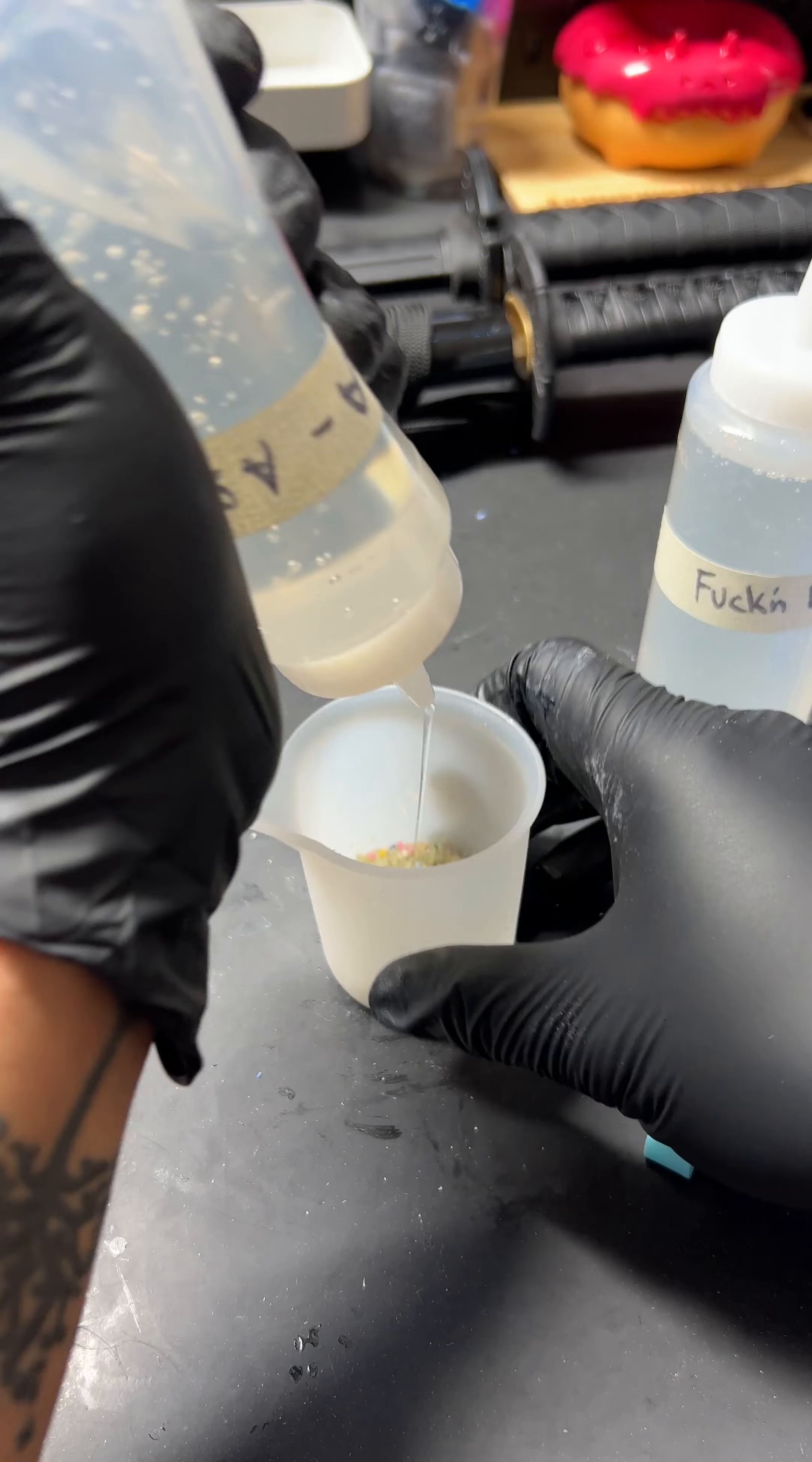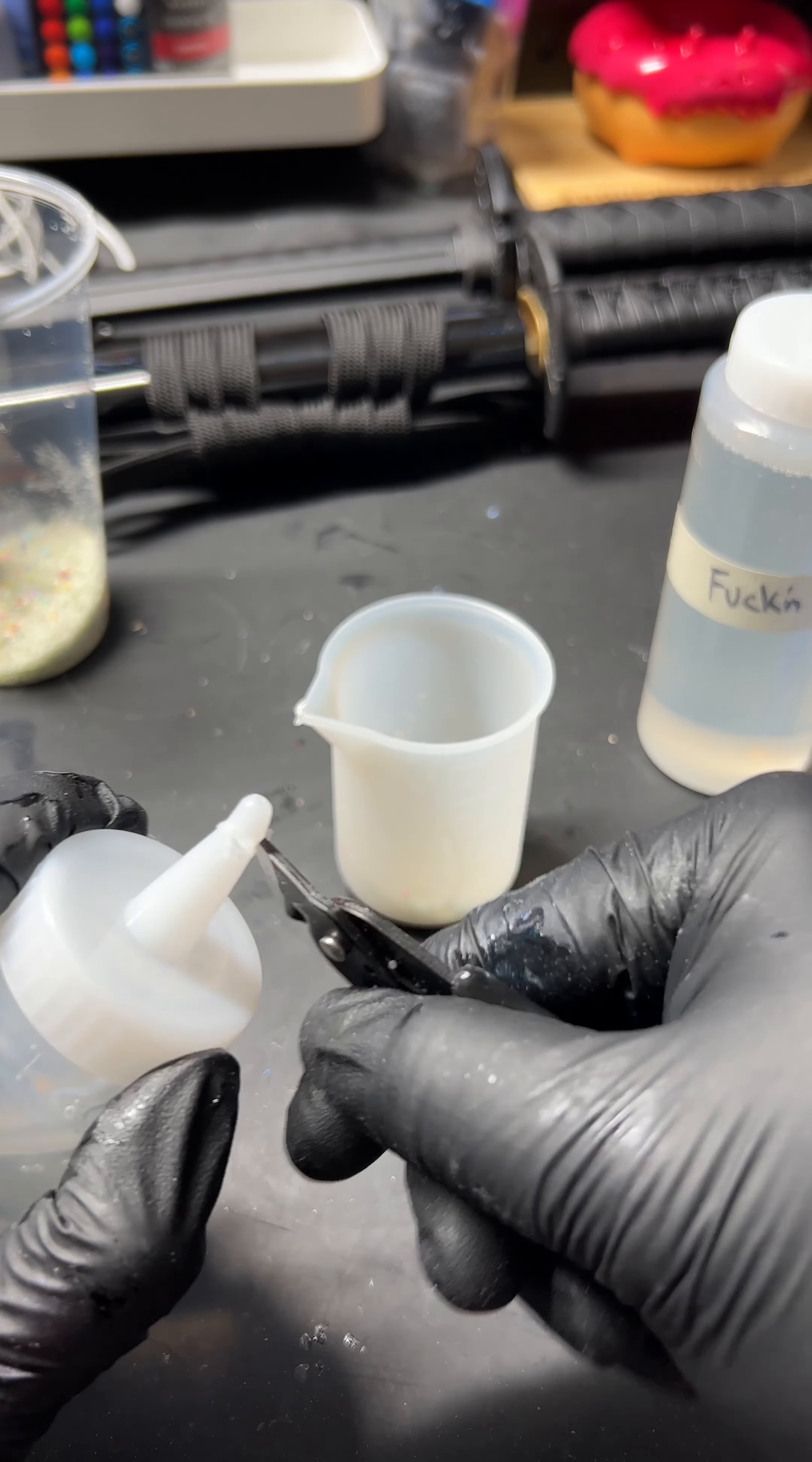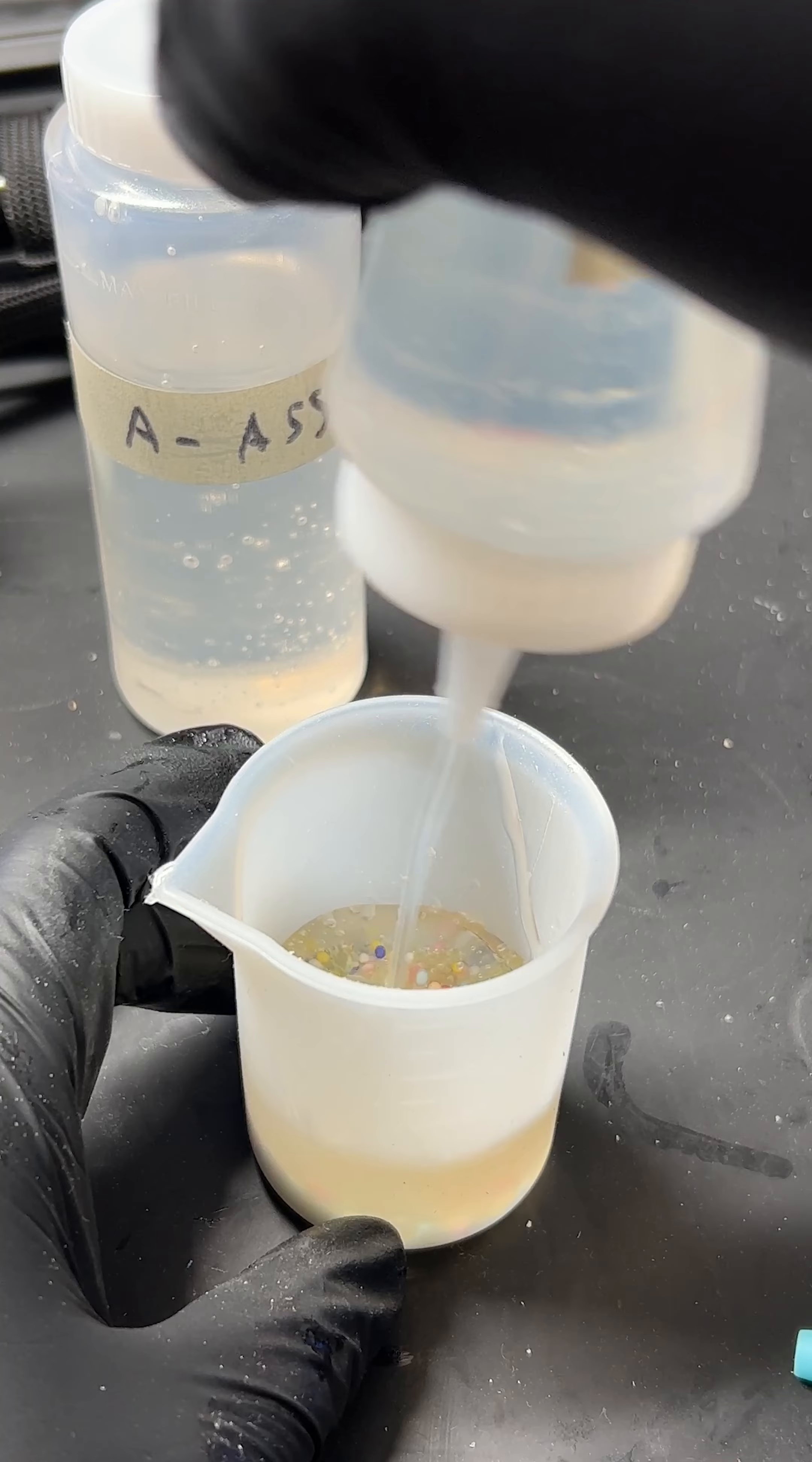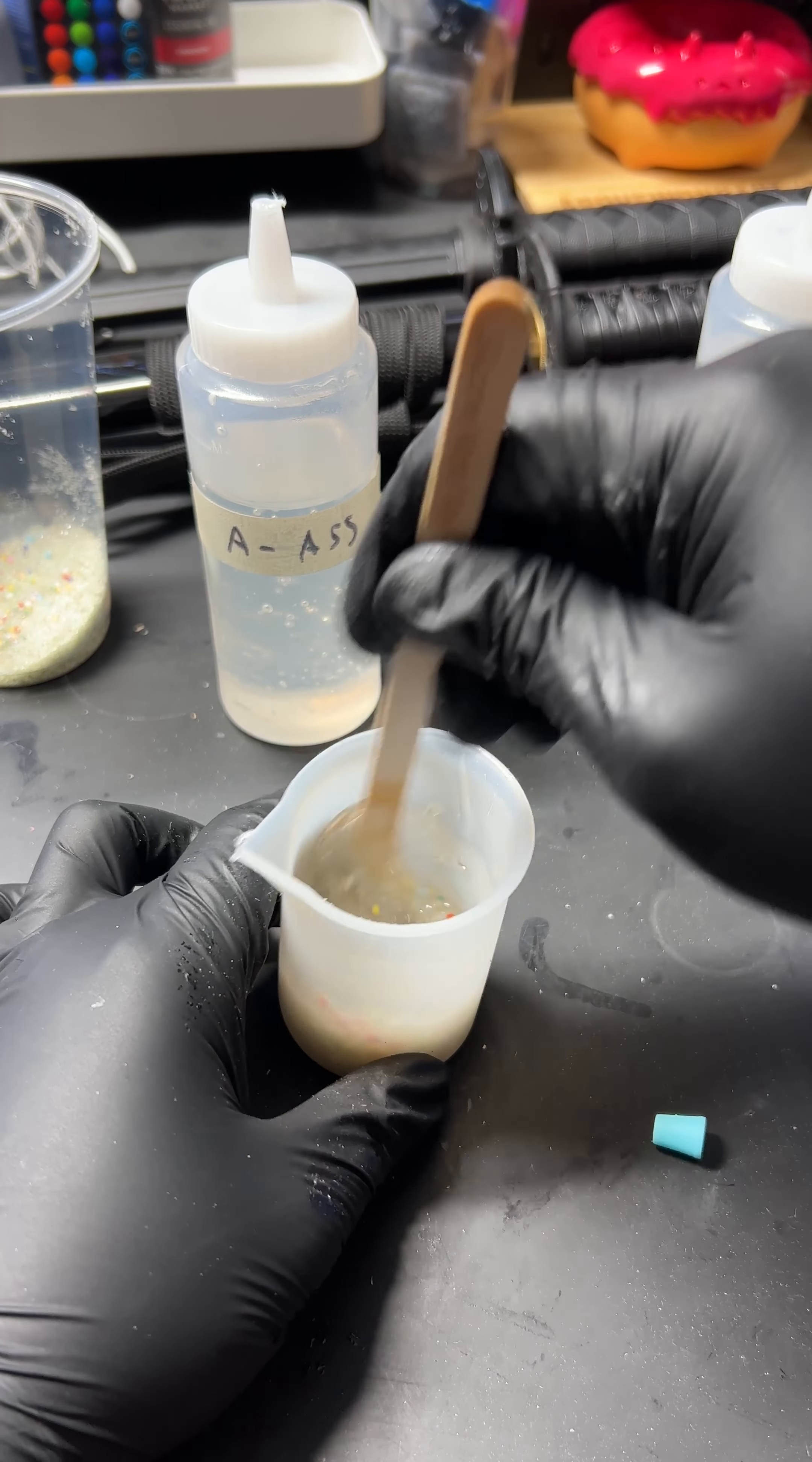This is a silicone mixing cup, nothing will stick to it. Part A is a little bit more viscous. It's very much like corn fructose syrup. Part B is a little bit more runny. I give it a good mix with the popsicle stick.